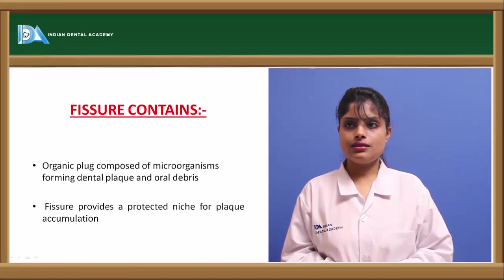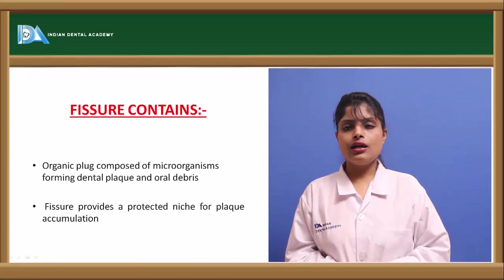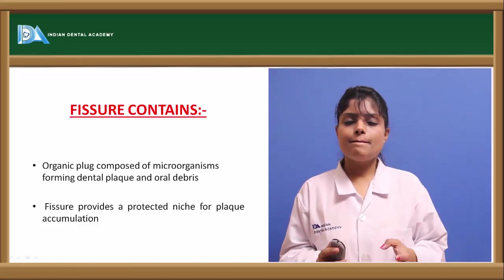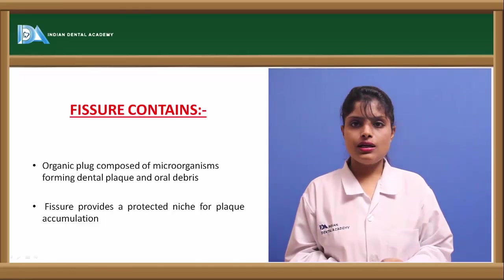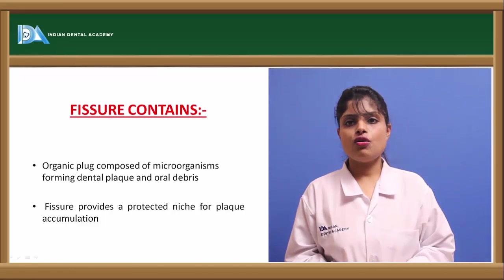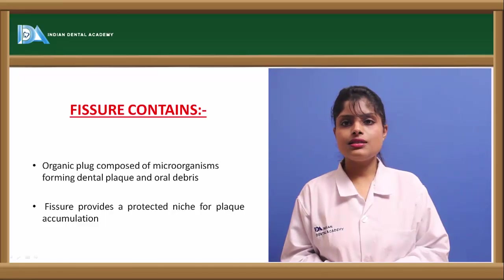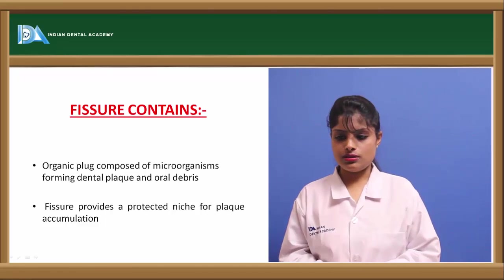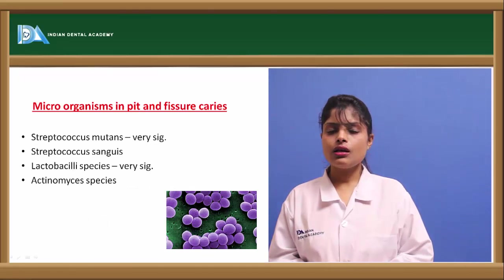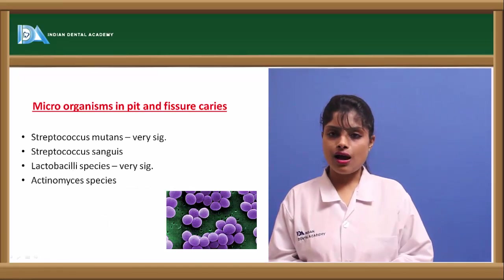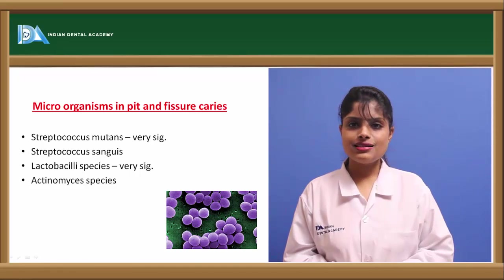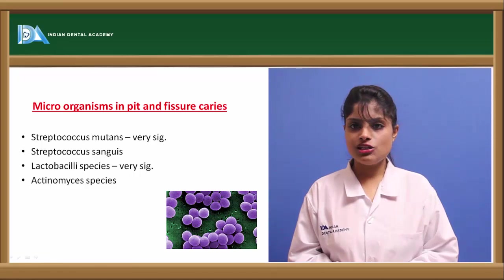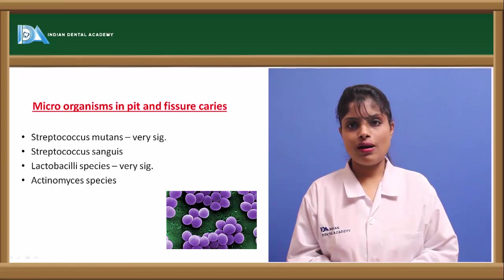Now, what does the fissure contain? It generally harbours an organic plug which is composed of microorganisms. It is a retentive house of plaque, debris, and microorganisms which may further lead into the carious process. The various microorganisms are Streptococcus mutans, Mitis, Sanguis, Salivarius, Lactobacillus species, and Actinomyces also.